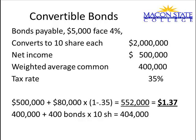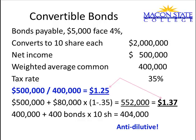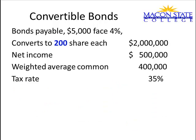Now I have to decide if that's dilutive or anti-dilutive. I go back to the basic earnings per share: $500,000 divided by 400,000 shares equals $1.25. This is anti-dilutive because it made earnings per share go up, so you would leave it off. Your basic earnings per share would be $1.25 and your diluted earnings per share, if this was the only security, would also be $1.25. Now I'm going to change the facts — freeze the frame and work it, then forward to the solution.